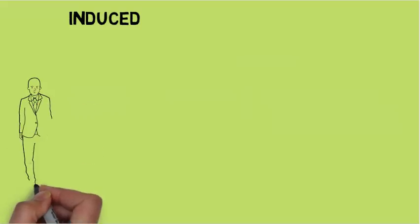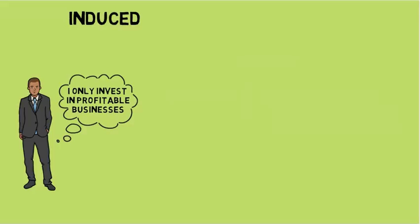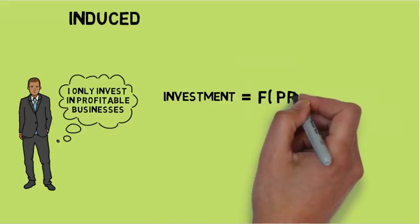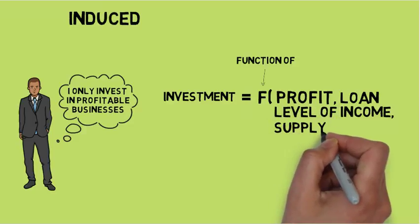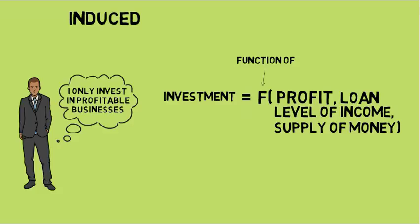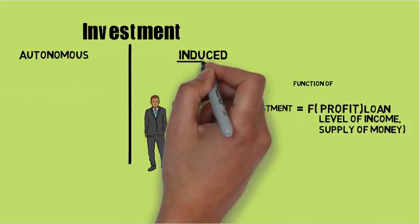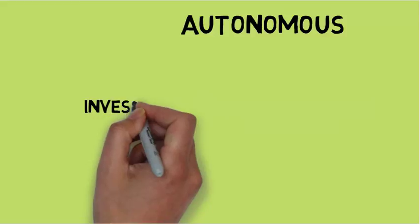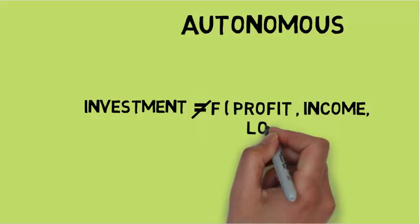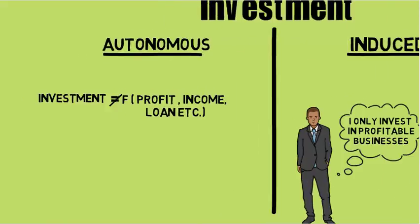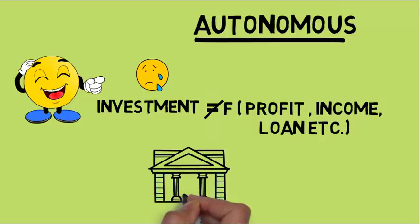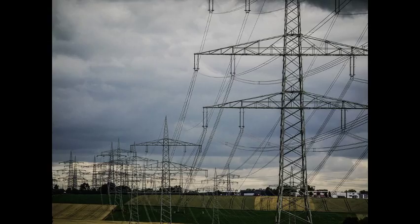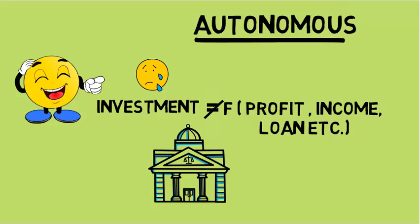A businessman will only make an investment in a business if he or she feels that the investment is going to give a profit. So investment firstly depends on the expectation of profit. Secondly, other factors like availability of loan, level of income, and supply of money all influence investment. When investment is made after looking at all these factors, we call it induced investment. Whereas when investment is made not looking at profits or any other factor mentioned, it's autonomous investment. There are certain government organizations that have to make investments in energy projects, irrigation projects, electricity generation plants, etc. for the development of the country — these are not for profit and do not depend on the factors mentioned above, hence they are autonomous.